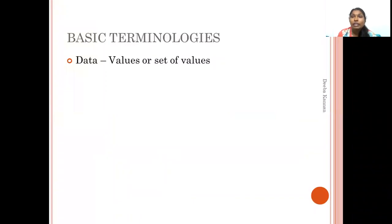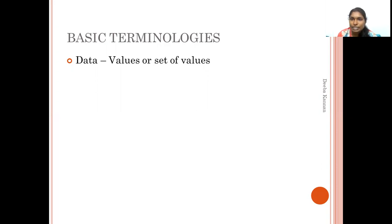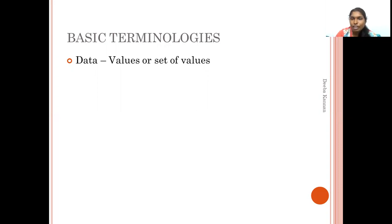First, the data. What is data? Data is a raw value, or a set of values. For example, name, age, date of birth, or profile — all of these are raw information. If you have student details such as register number or subject, all of these are data. Data is simply values or a set of values.